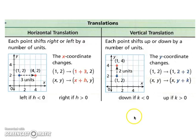A vertical translation, each point shifts up or down by number of units. So if you're going up or down, you use the y coordinate, so the y coordinate is what's changing. If k is less than 0, you go down. If k is more than 0, you go up.